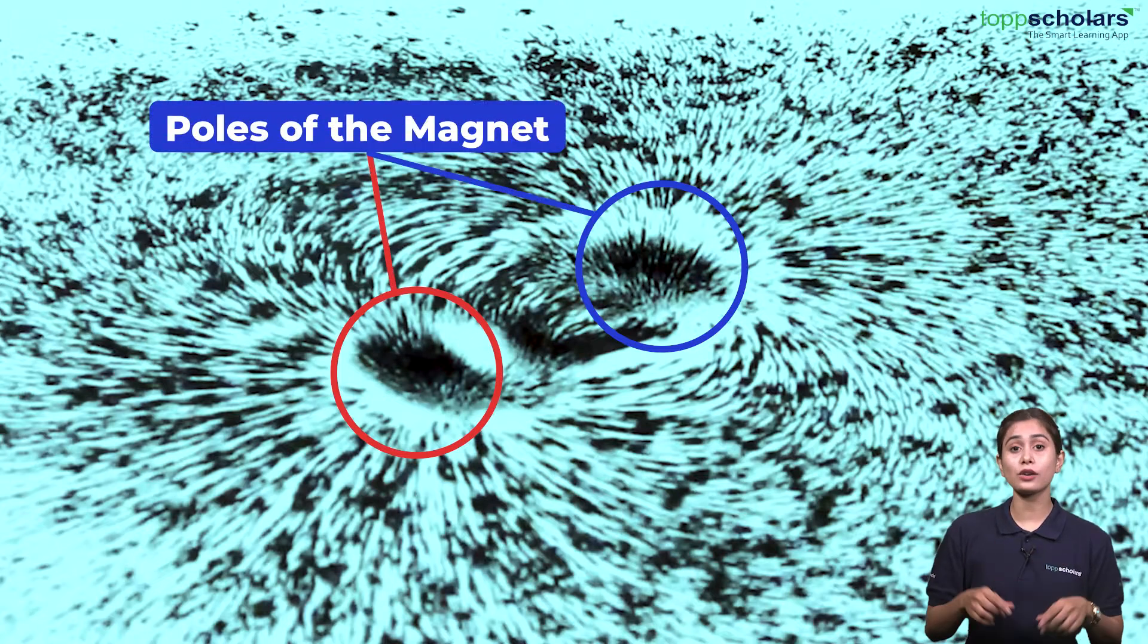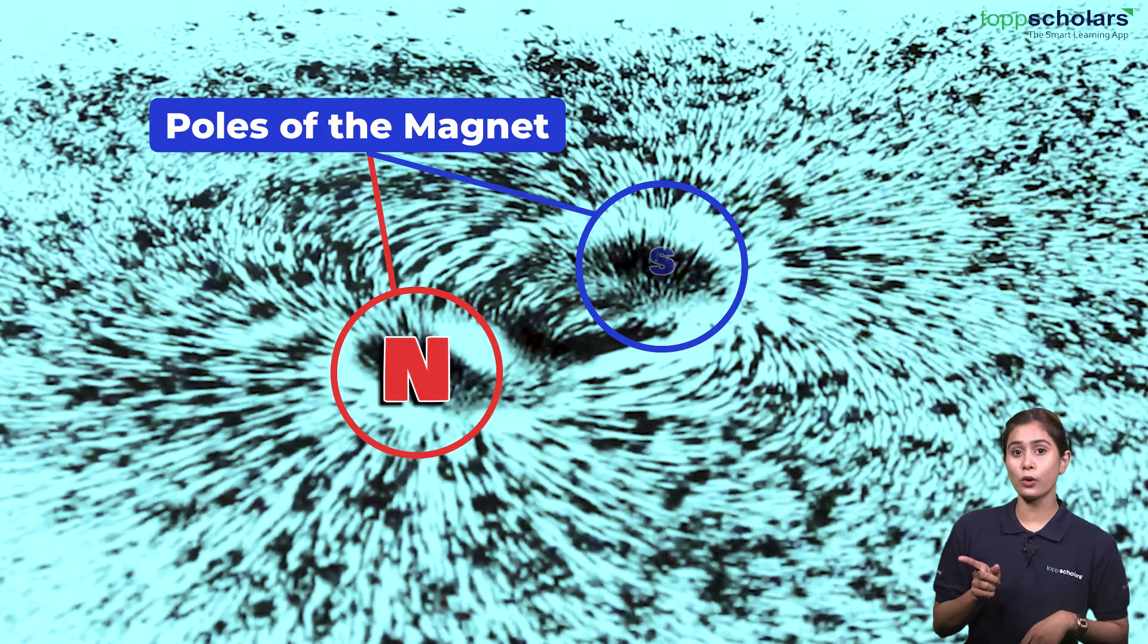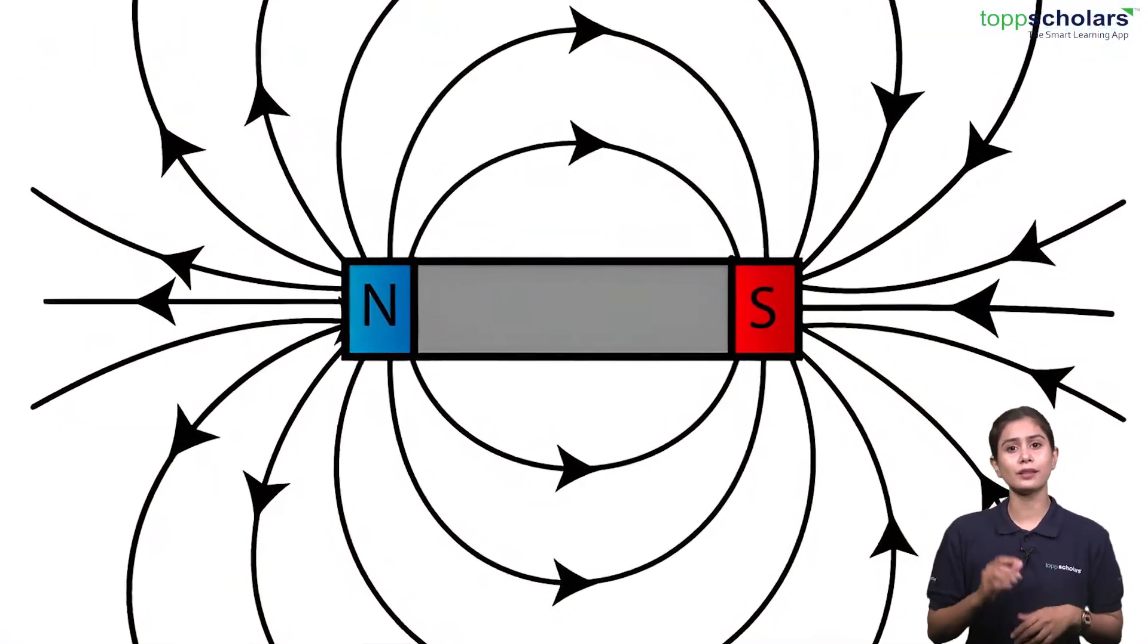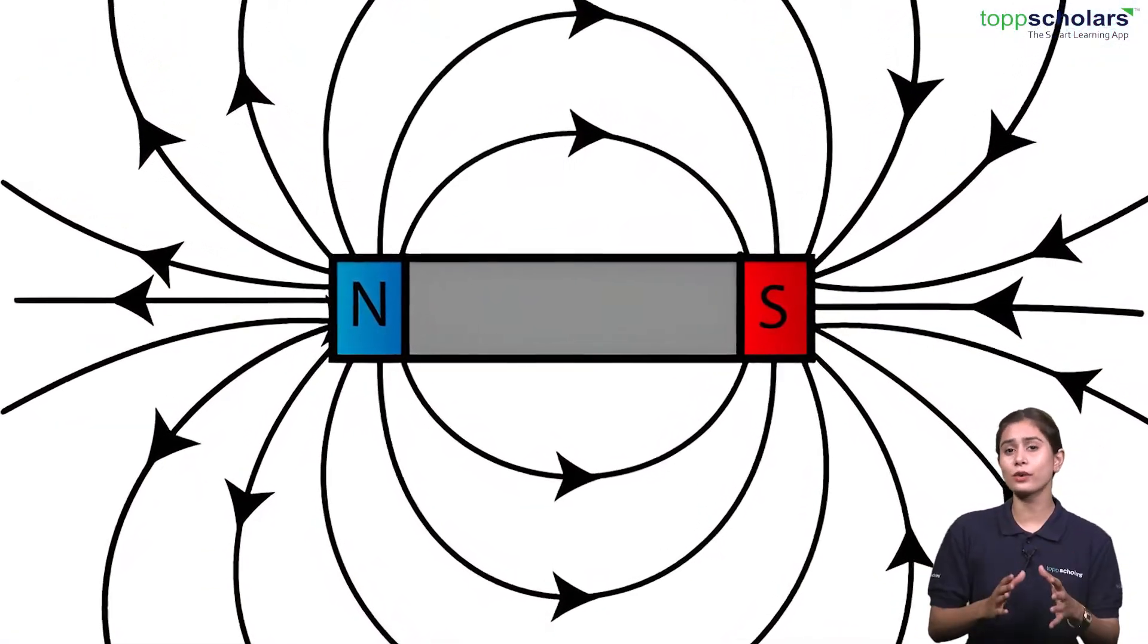These two ends are called the poles of the magnet. There is a north pole and a south pole. Every magnet has both of these poles where the magnetic force is the strongest.